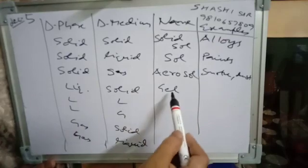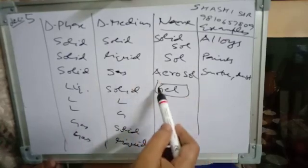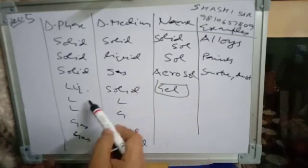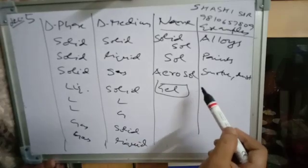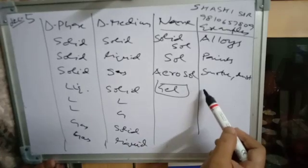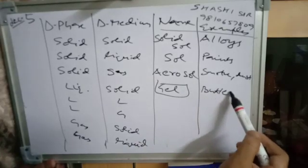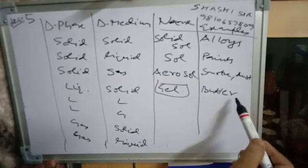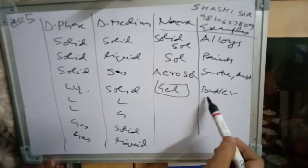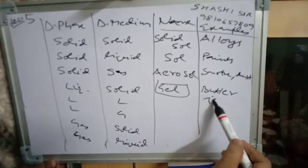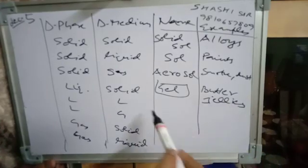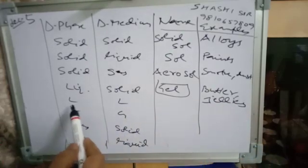Liquid in solid is called gel. Examples include jelly, butter (which is a water dispersion in fats), and cheese. Liquid in liquid is called emulsion. Examples include milk (oil in water), hair cream, and cod liver oil.